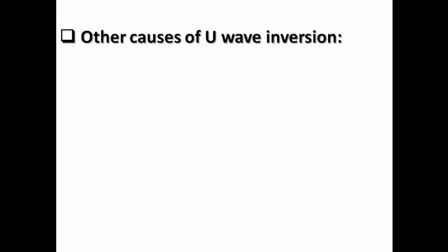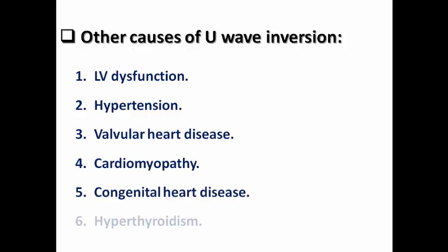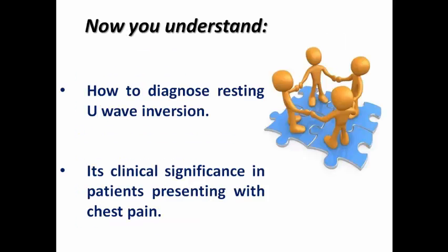What are the other causes of U wave inversion to be oriented with? Sometimes it is caused by other pathologies rather than myocardial ischemia: LV dysfunction, hypertension, valvular heart disease, cardiomyopathy, congenital heart disease, and hyperthyroidism. So sometimes you may find that the coronaries are normal on angiography and echocardiography shows other pathologies that may cause resting U wave inversion.